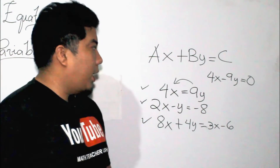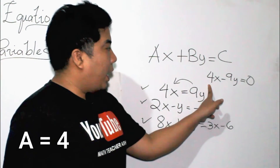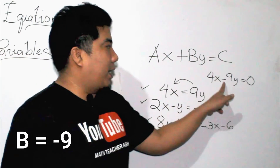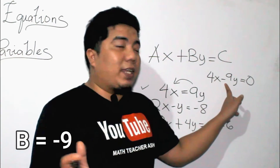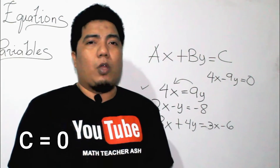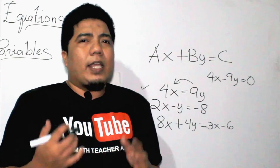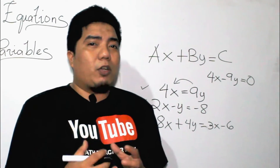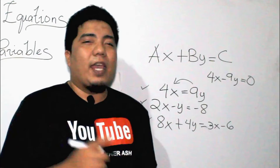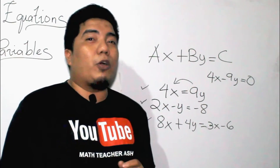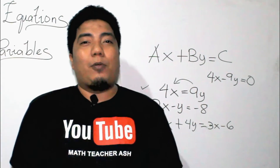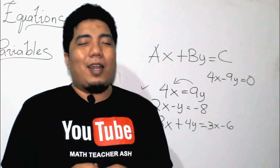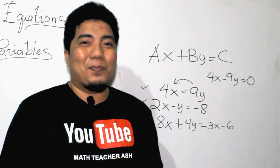So what are your a, b, and c? Your a is 4, your b is negative 9, and your c is 0. The question is, is it allowed to have a value of 0 for c? Yes, it's allowed. Because according to the standard form, only a and b should not be equal to 0.